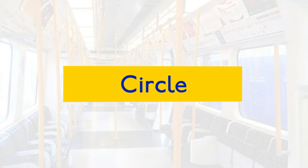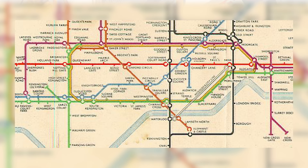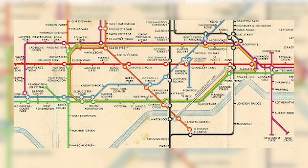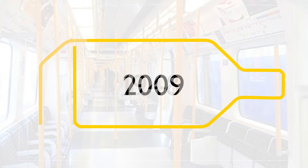The Circle Line didn't appear on the official tube map until 1948, and became so because of the circular services that the Metropolitan and District Line shared. London Transport gave it its own official colour and name in this year, except that now — in 2009 — the extension down to Hammersmith means that the Circle Line is no longer a circle.